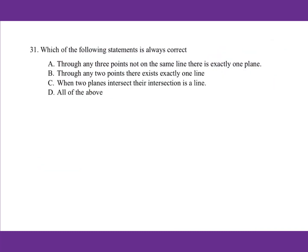For number 31, which of the following statements is always correct? Through any three non-collinear points, there is exactly one plane — that's correct. Through any two points, there exists exactly one line — that's right, because two points determine a unique line. When two planes intersect, their intersection is a line — that's true. Therefore, the answer is all of the above.